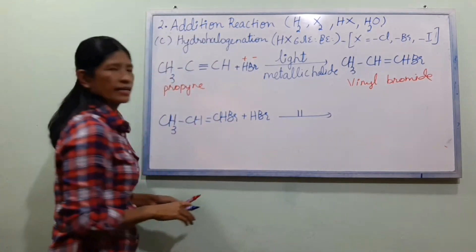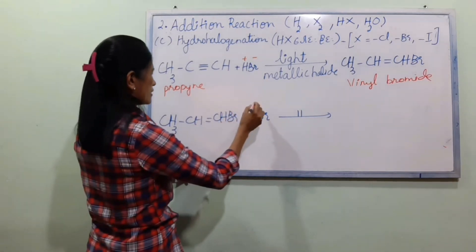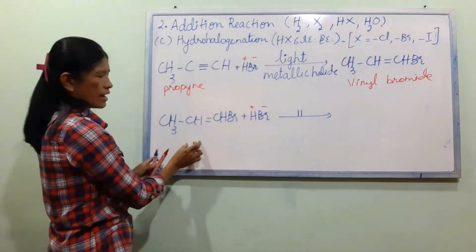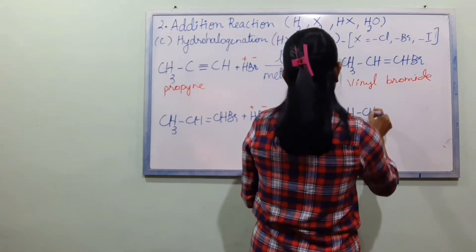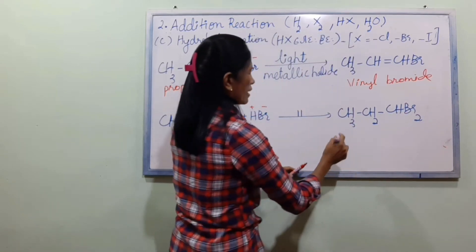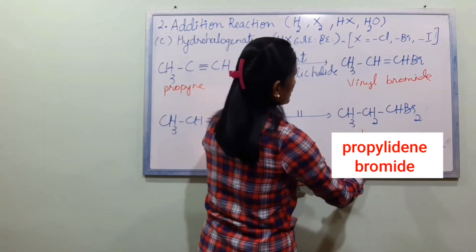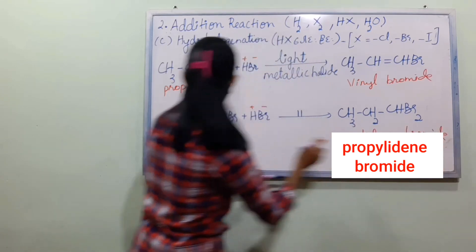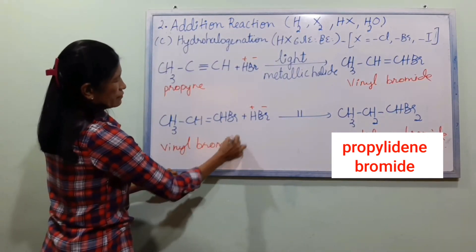The conditioning is light and metallic. CA3C reacts with CH3, CH2, and CH2. The first three carbons use CH2, CH2, CH2. We will use CH3, CH2, CH2, CH2 to get vinyl bromide — V-R-O-M-I-D-E, bromide.